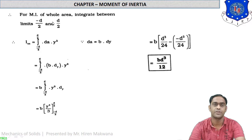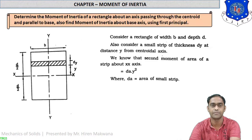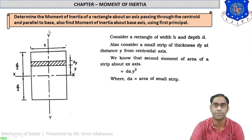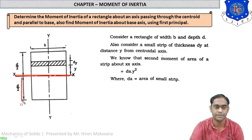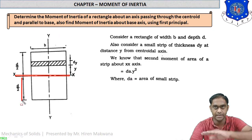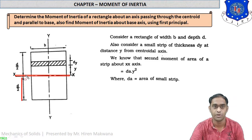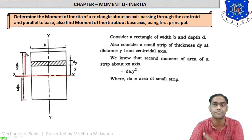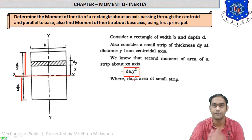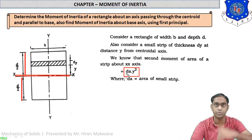For the moment of inertia of the whole area, we integrate between limits minus d/2 and plus d/2. The lower limit is minus d/2 because the strip goes below the centroidal axis, and the upper limit is plus d/2 in the positive y direction.